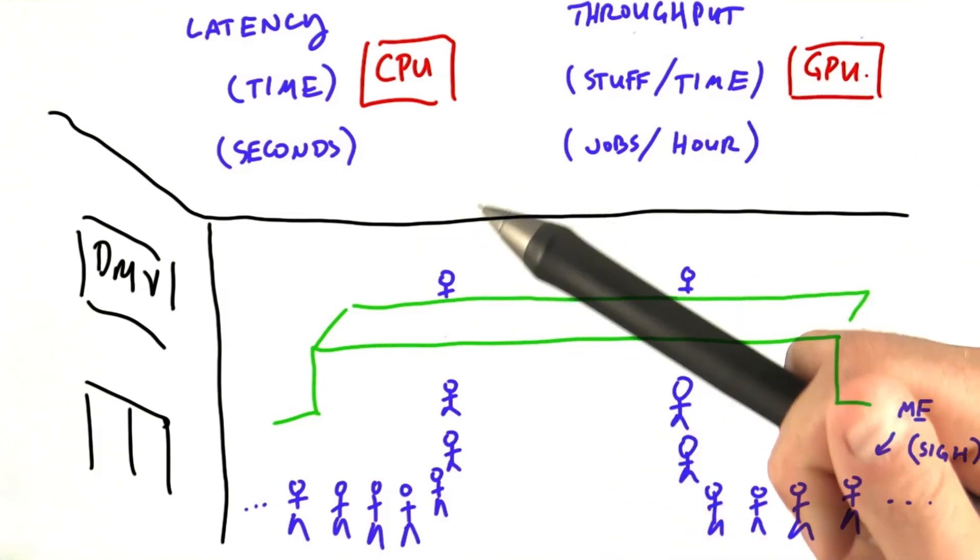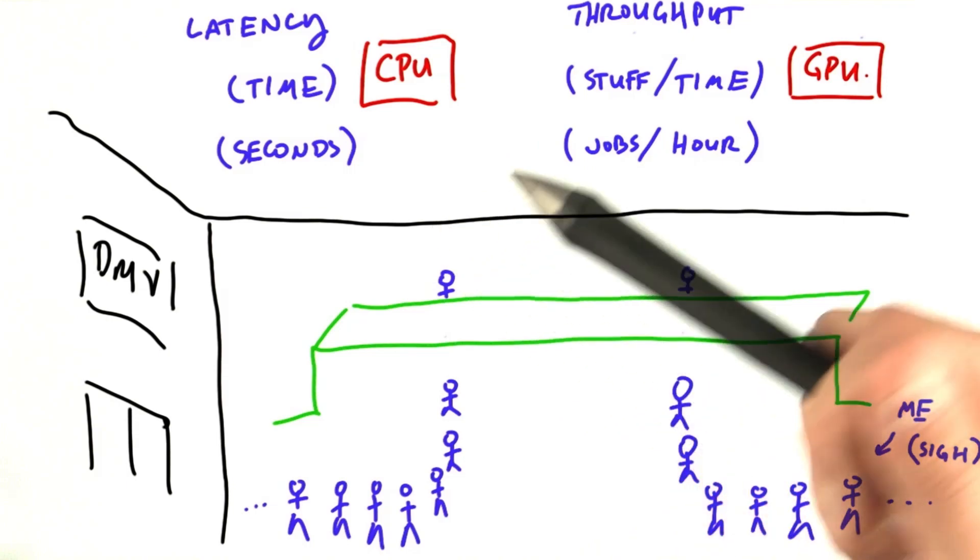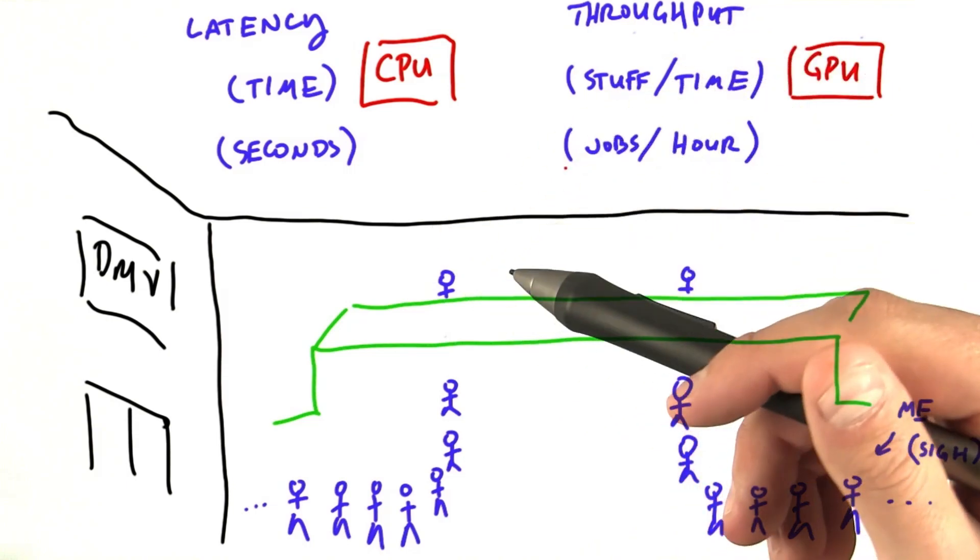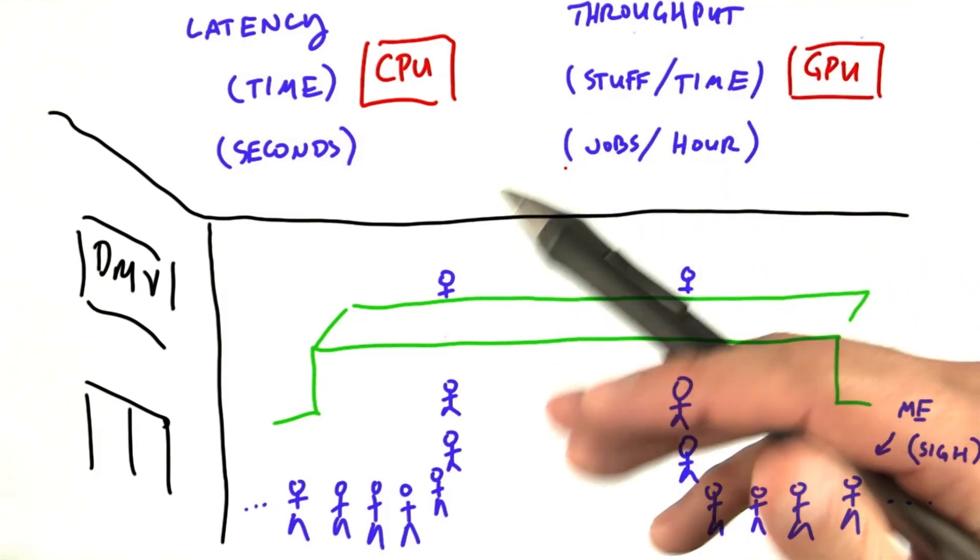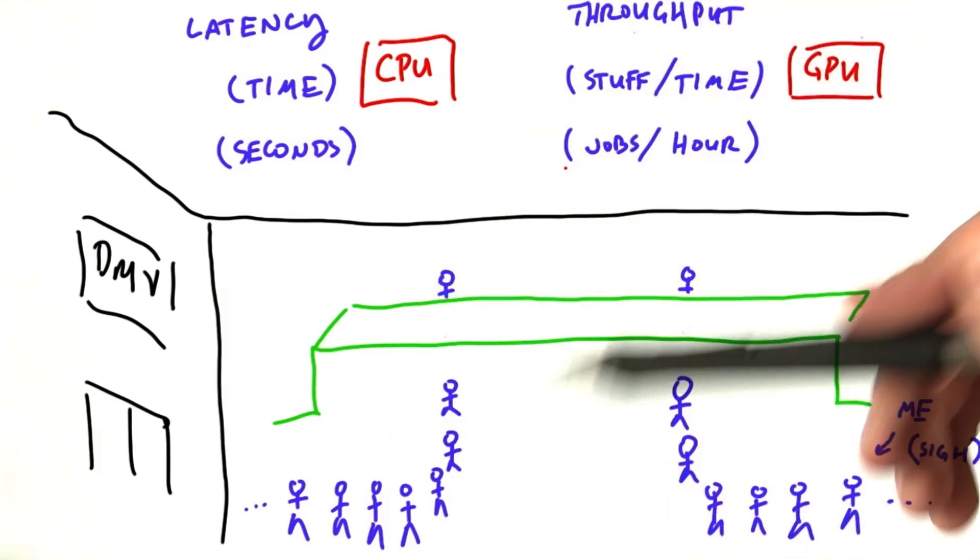In computer graphics, for instance, we care more about pixels per second than the latency of any particular pixel. We're willing to make the processing time of one pixel take twice as long if it means we get more pixel throughput.